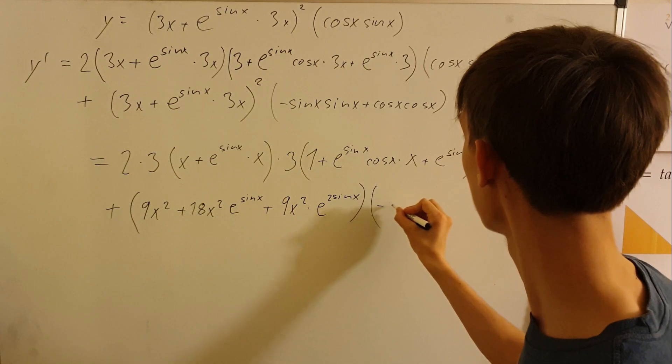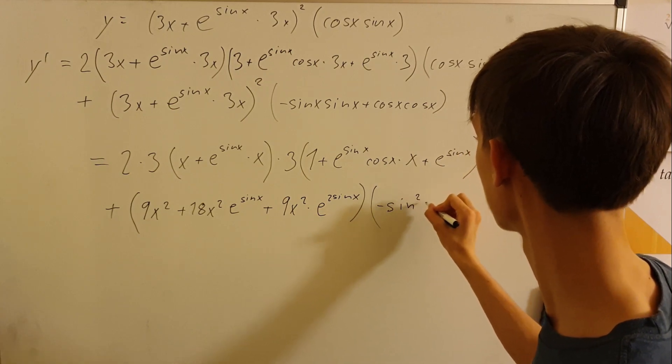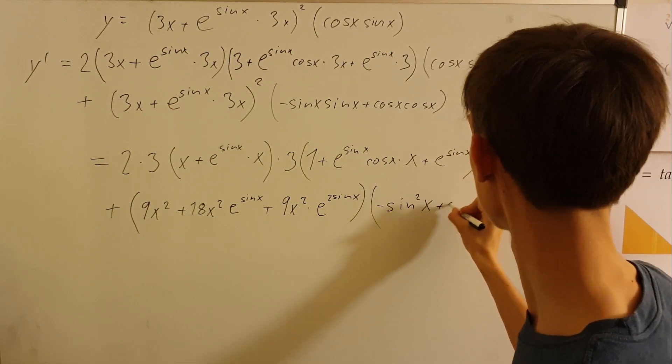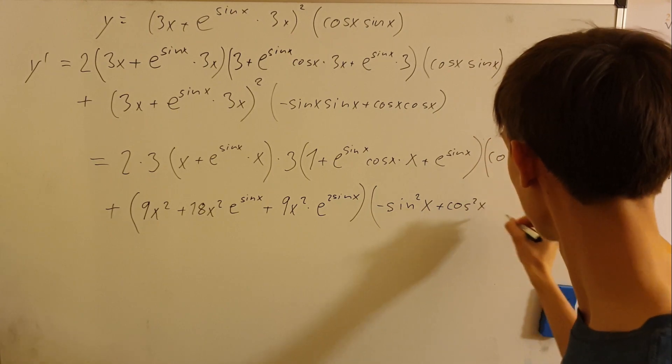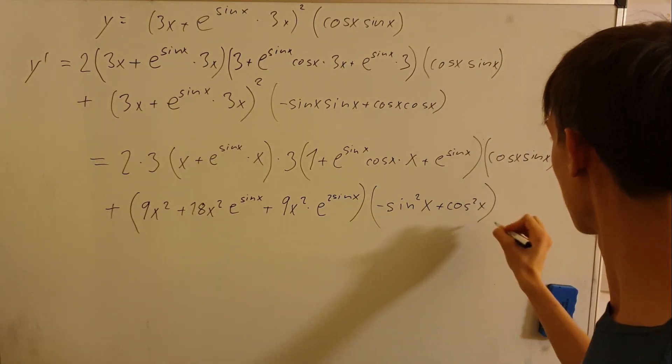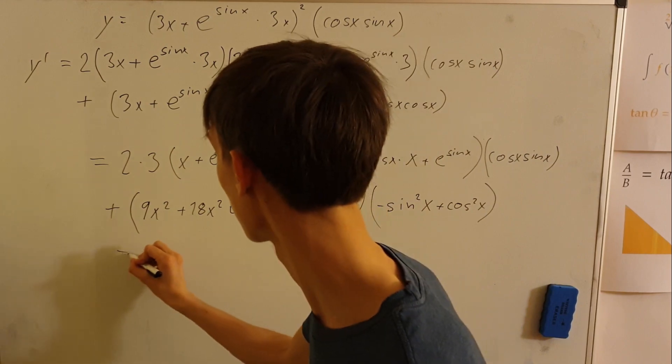18 x squared e to sine x plus 9 x squared times e to 2 sine x. And this will be multiplied by, we can rewrite this as this. Okay so we now have this and this already looks a little more legible maybe.